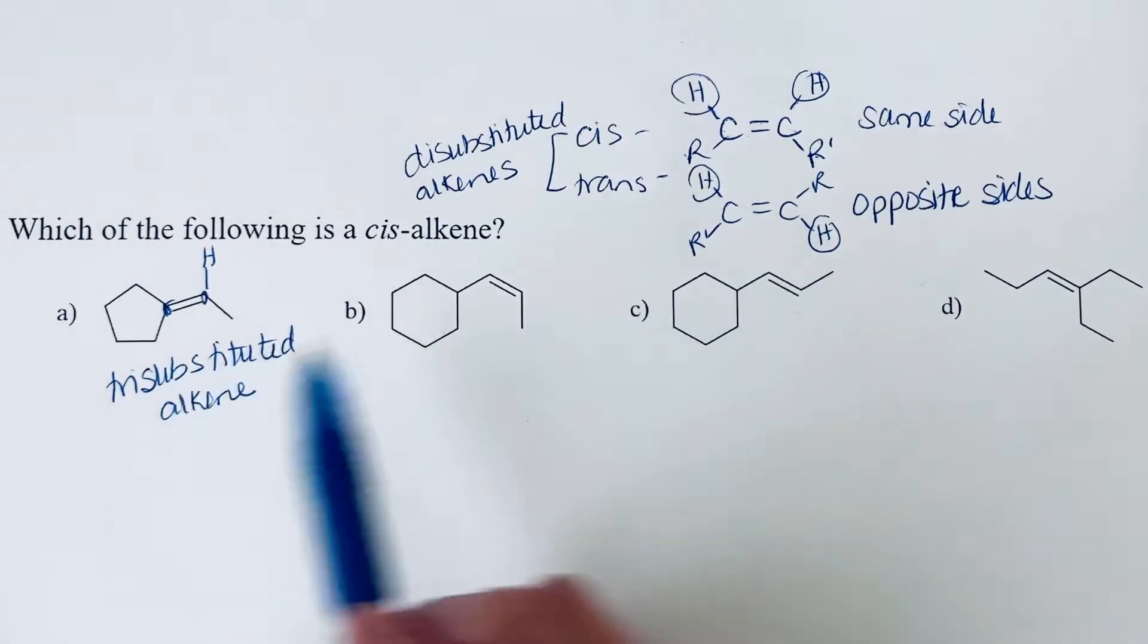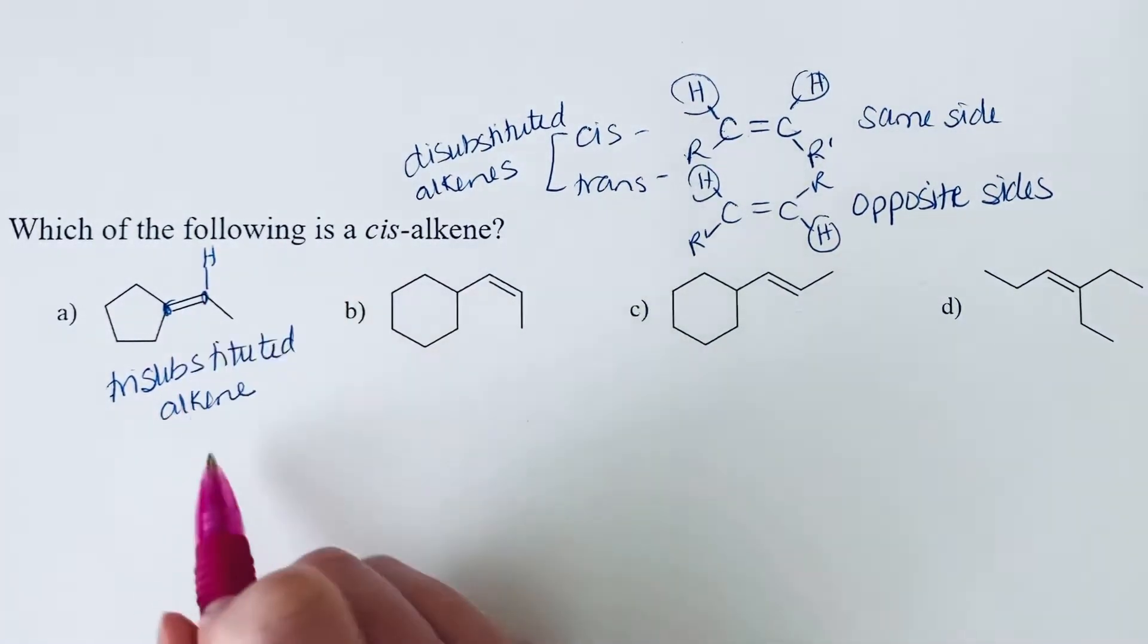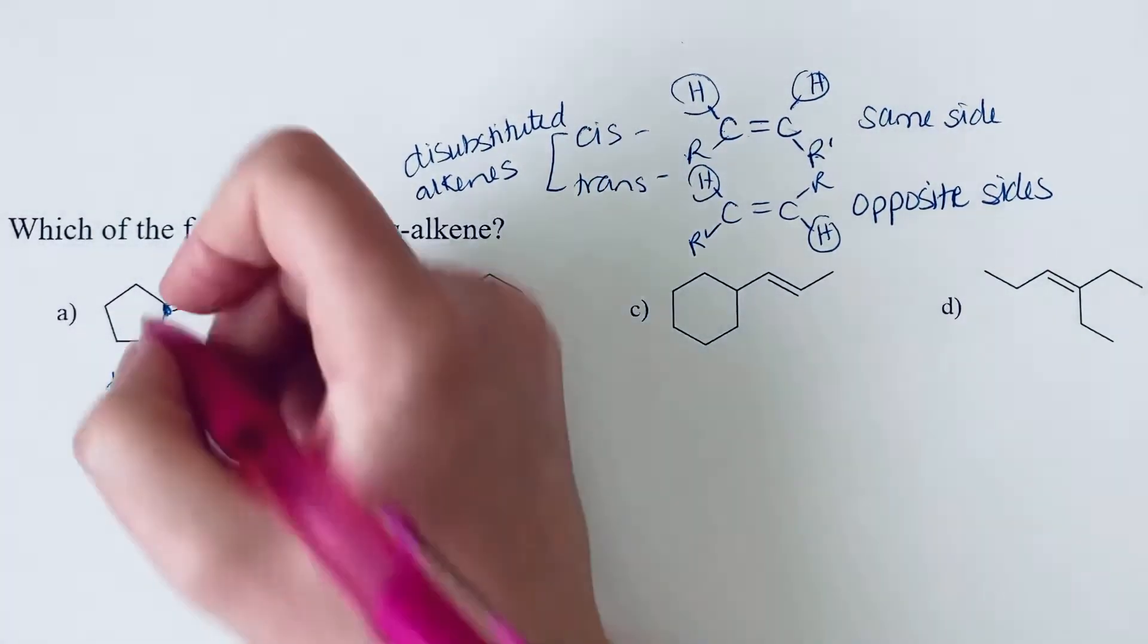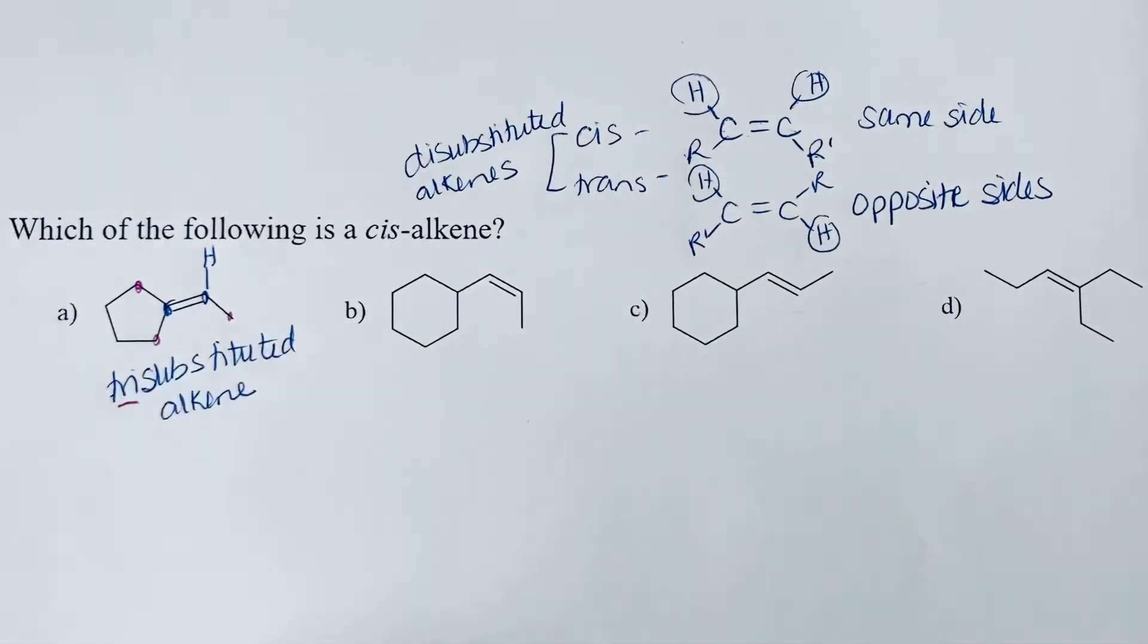And so how we're getting tri-substituted, just to be really clear about this, is we're looking at these alkene carbons and saying how many bonds to substituents do they have to things that are not hydrogen. And so we have one, two, three carbon atoms. That's why that's tri.